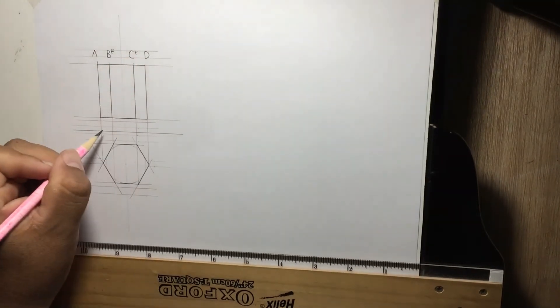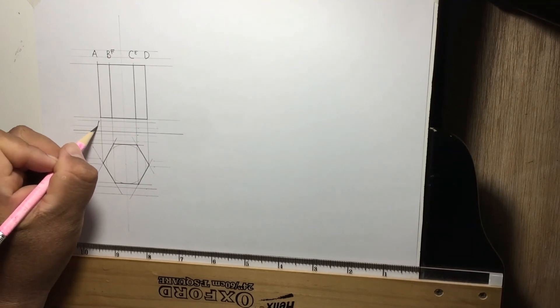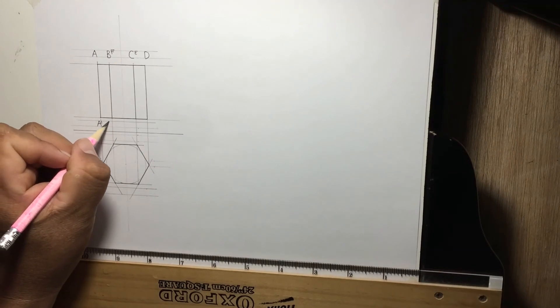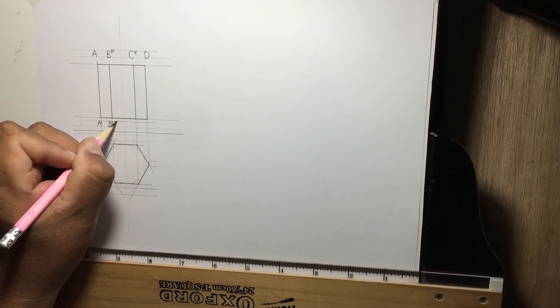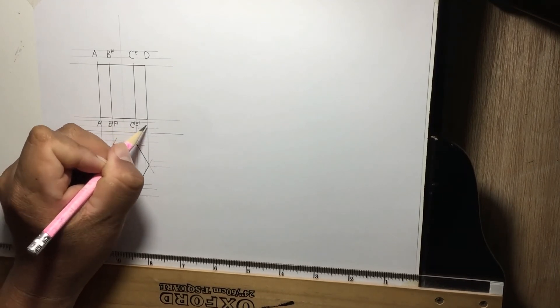And D. Okay, and then the bottom one follows the same order: B1, F1, C1, E1, and D1.